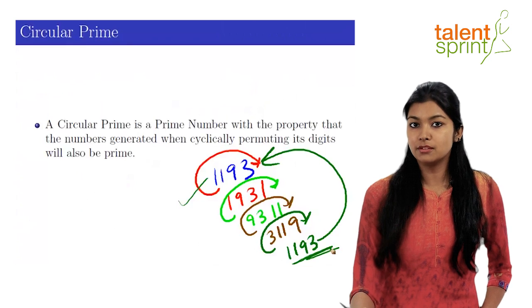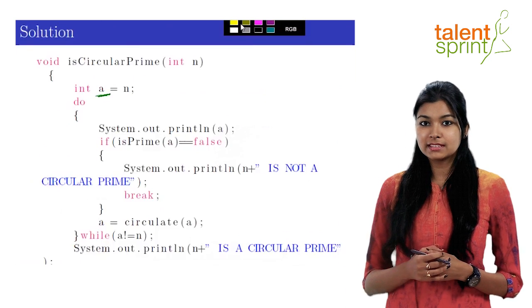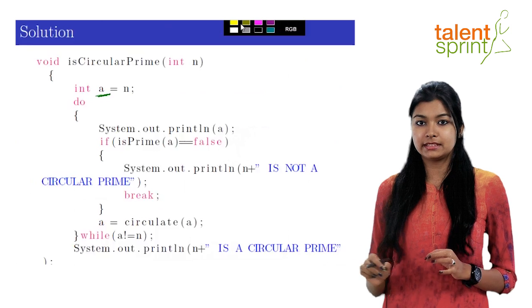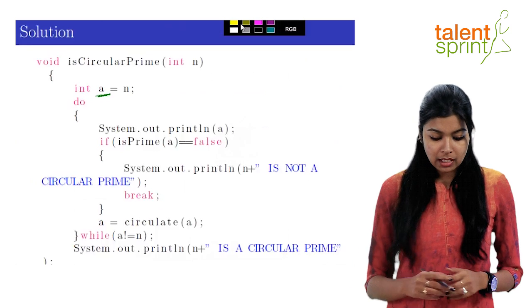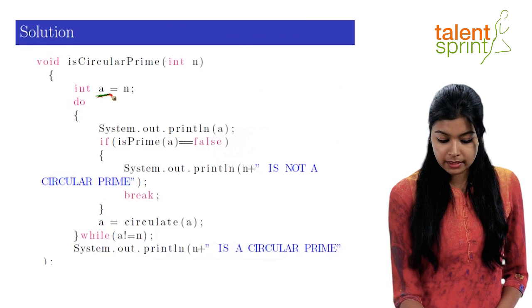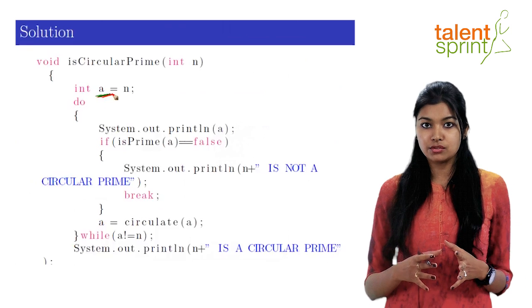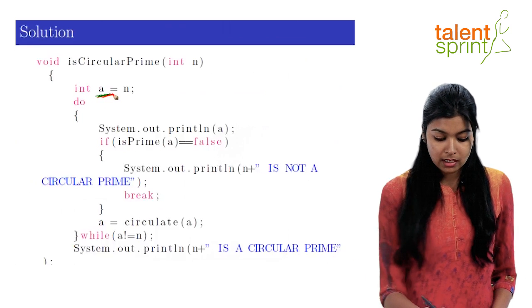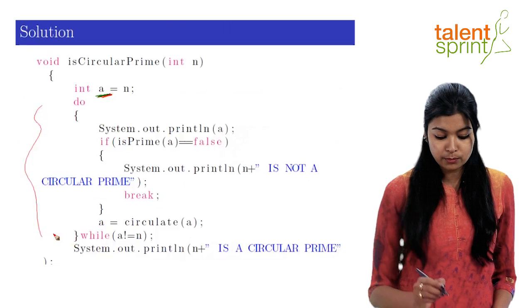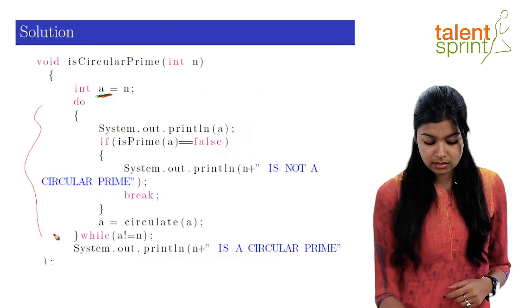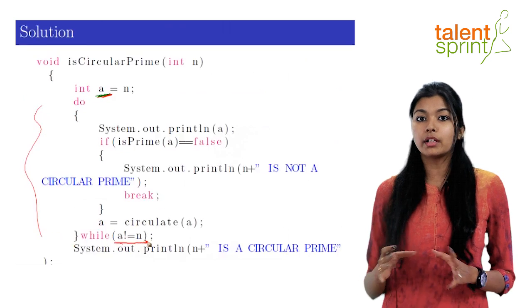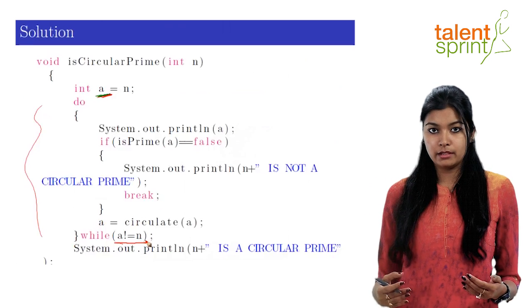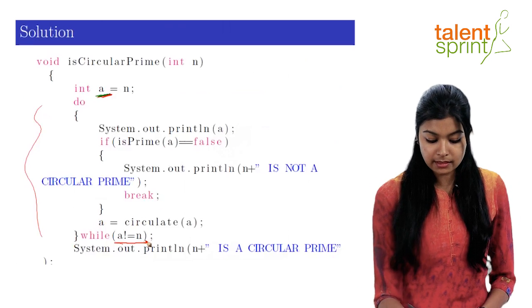Let me show you how we write the functions. As you can see on this slide, we have written the function isCircularPrime that takes the number to be tested as input parameter. And we have created a dummy variable a, which is initialized to n. Now you'll understand the use of it in a little while. Inside we have created a do while loop. So this loop will run till a is not equal to n. So the first iteration, there is no check in a do while loop.